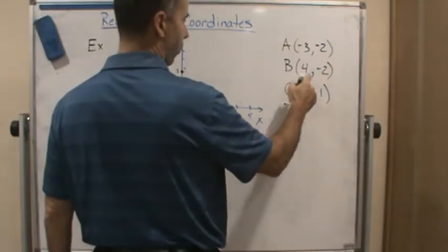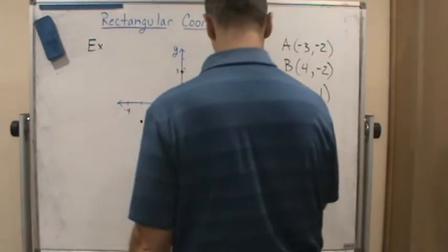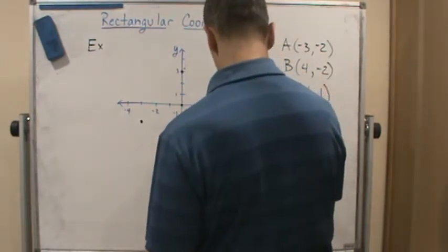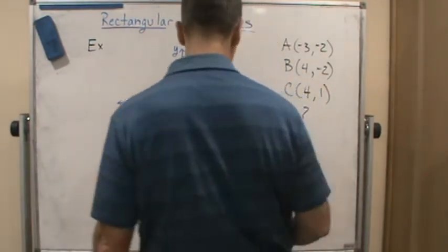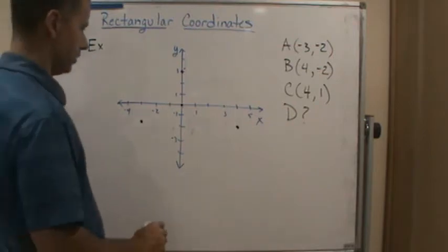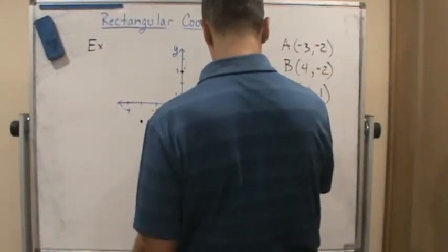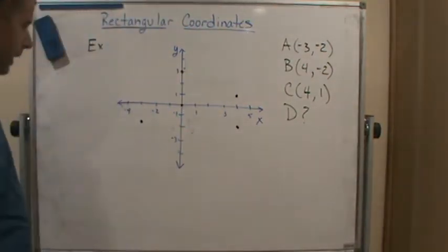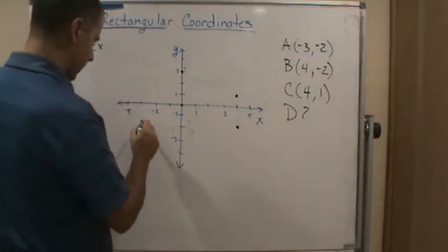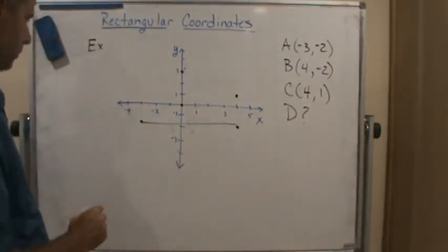And then we get 4, negative 2, which is going to put us right about here. And then 4, 1, which is going to be right here. Now we notice that... oops.